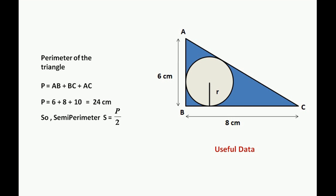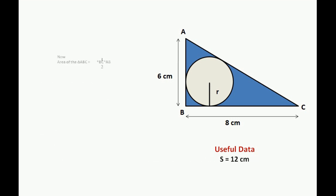The semi-perimeter S equals P by 2, which is 24 by 2, equaling 12 cm. The area of the triangle is half times the base times height. The base is BC and the height is AB. Therefore, the area is half times 8 times 6, which is 24 cm squared.